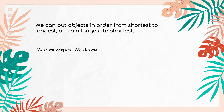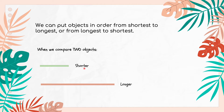We can compare two objects, and whenever we are comparing only two objects we are going to use these terminologies. This is a line and this is another line. You can see the green line is shorter whereas the pink line is longer. Whenever we compare only two objects, we use the terms shorter and longer — these end with 'er'. We add 'er' at the end of the word short to make shorter, and at the end of long to make longer.